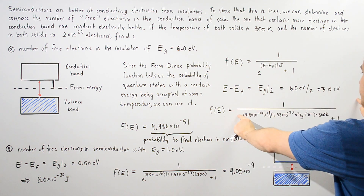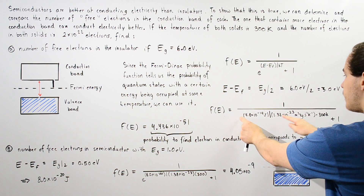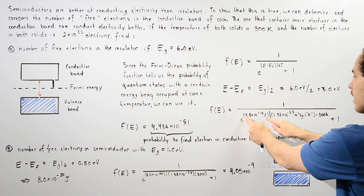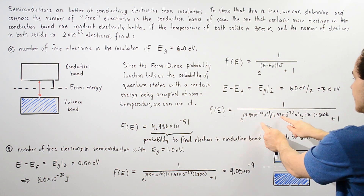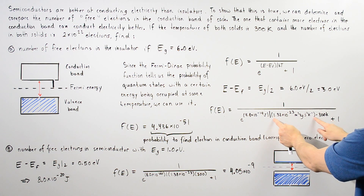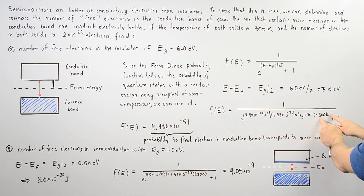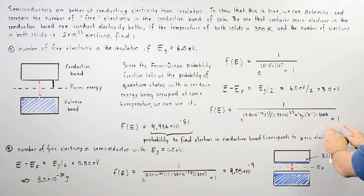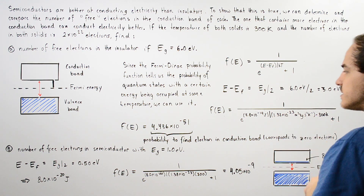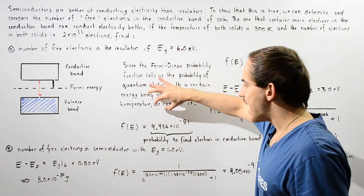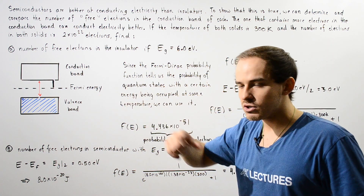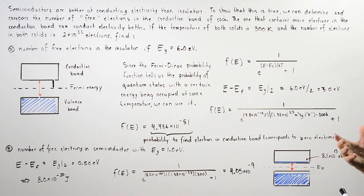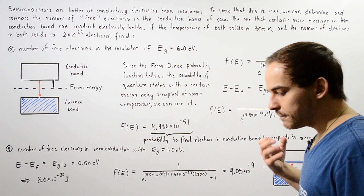Plugging into the Fermi-Dirac function — 1 divided by (e to the power of our energy divided by the Boltzmann constant times temperature, plus 1) — gives us a value of approximately 4.436×10⁻⁵¹.